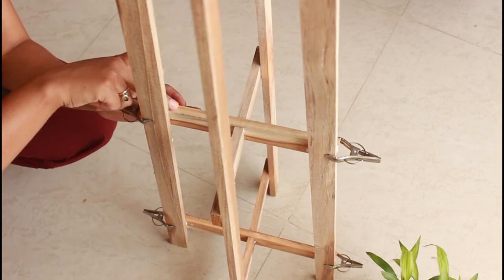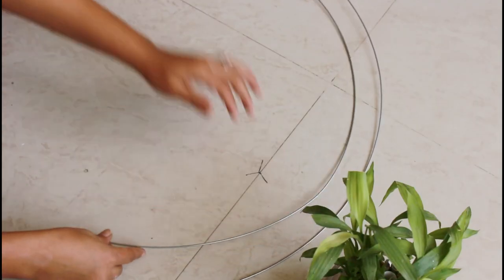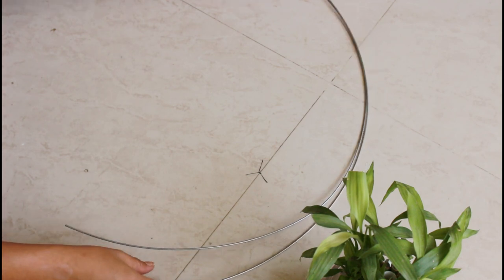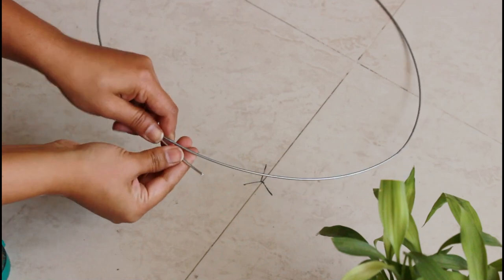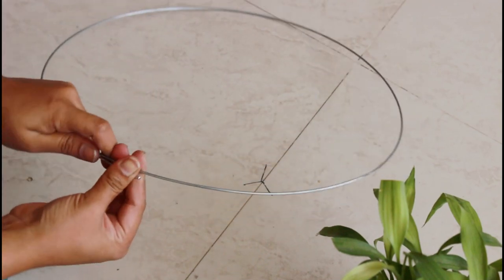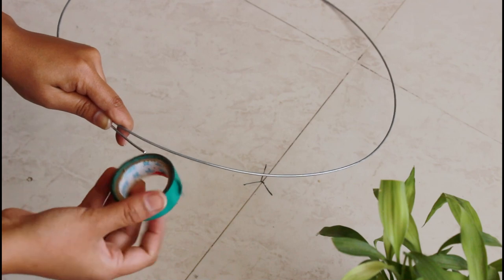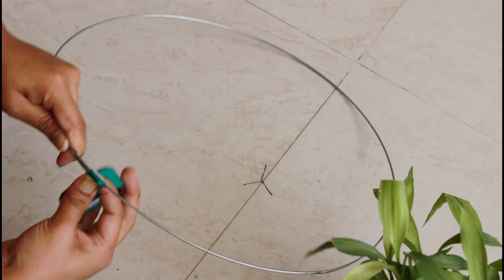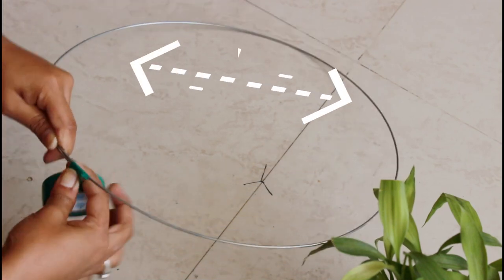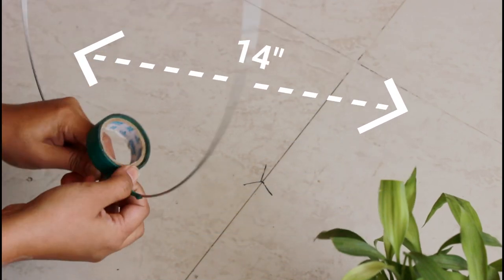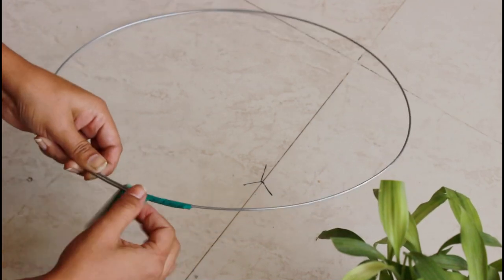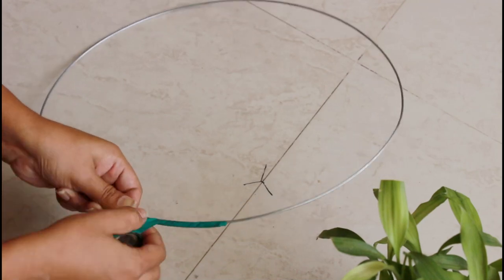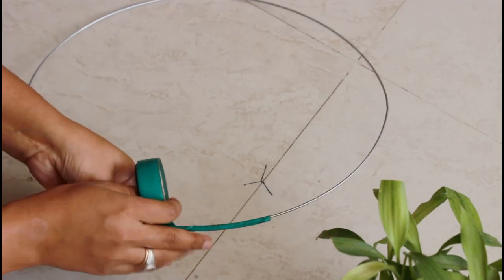Now we will make the lampshade structure. Here I purchased this wire from the hardware shop, weight-wise purchase. I got a lot of wire for 40 rupees. I cut this wire to 14 inches for the diameter in extra length. I used electrician tape and secured it properly.